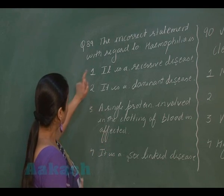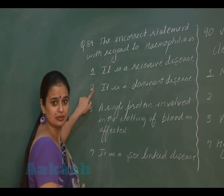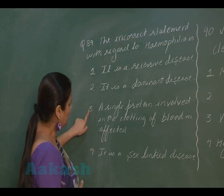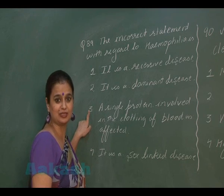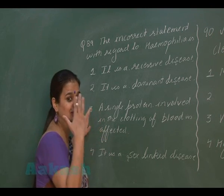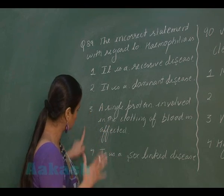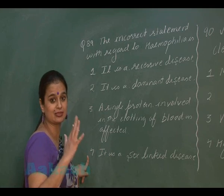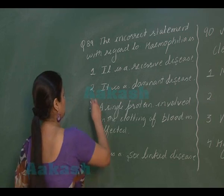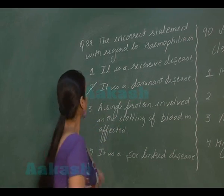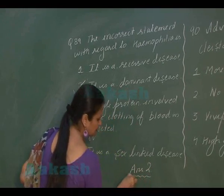Looking at the options: first option says it is a recessive disease — correct. Third option says a single protein involved in blood clotting is affected — correct (factor 8 in hemophilia A, factor 9 in hemophilia B). Fourth option says it is an X-linked sex-linked disorder — correct. The incorrect option is option 2, which states it is a dominant disease. So the answer for question 89 is option 2.